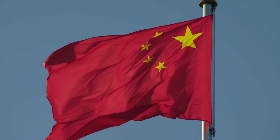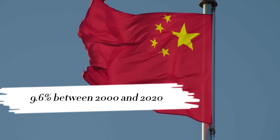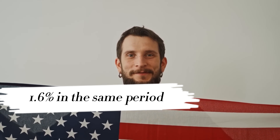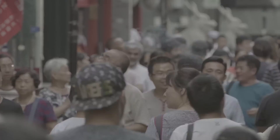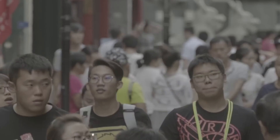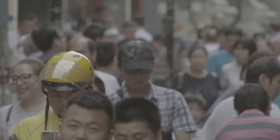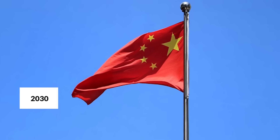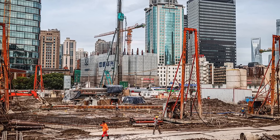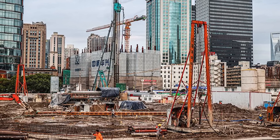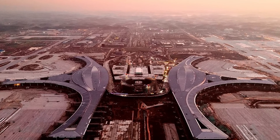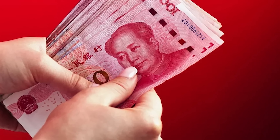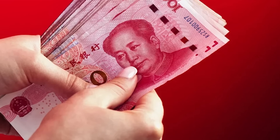According to the International Monetary Fund, the Chinese economy grew at an average annual rate of 9.6 percent between 2000 and 2020, while the US economy grew at an average annual rate of 1.6 percent in the same period. This means that the Chinese economy is growing faster than the American economy and may eventually surpass it in size. Some predictions suggest that China could overtake the US economy by 2030 based on current economic trends. Additionally, China is investing heavily in infrastructure worldwide, especially in developing countries, with many projects funded in Yuan, increasing demand for the currency.